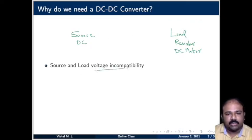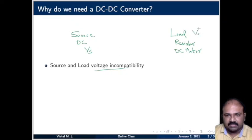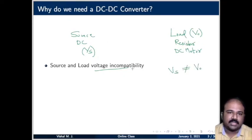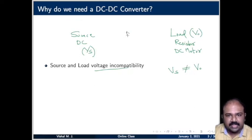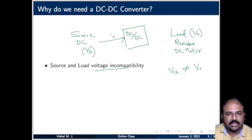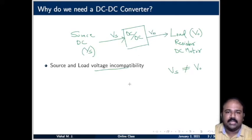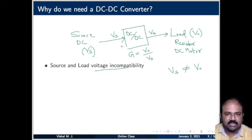The reason is the voltage incompatibility between the two. If the source voltage is VS and the required load voltage is V0, and if VS is not equal to V0, then we cannot connect them directly. That is why we need a DC-DC converter, which sits in between, accepts voltage at level VS, and gives out voltage at a level compatible with the load. The gain of this DC-DC converter is V0 divided by VS.